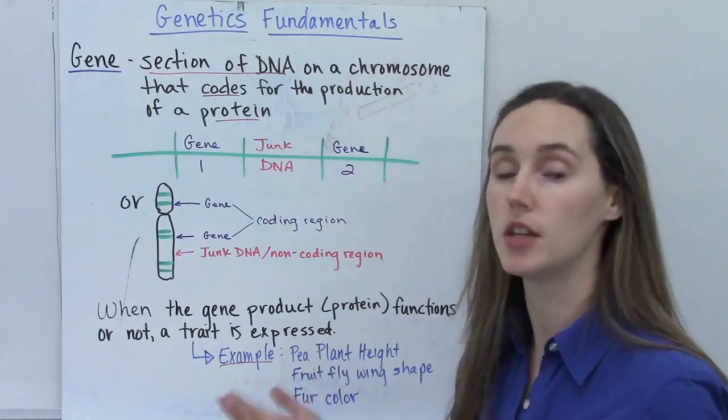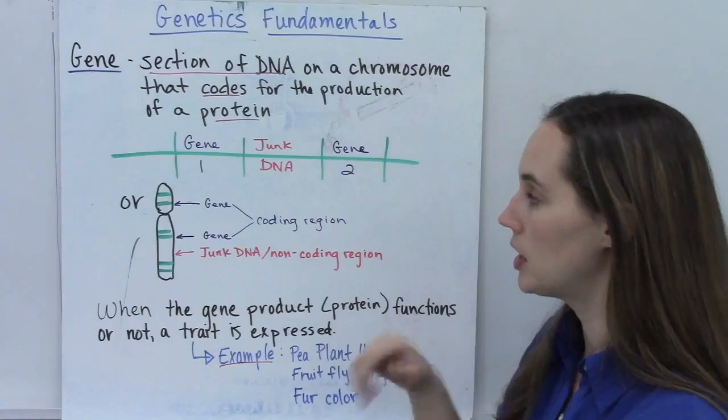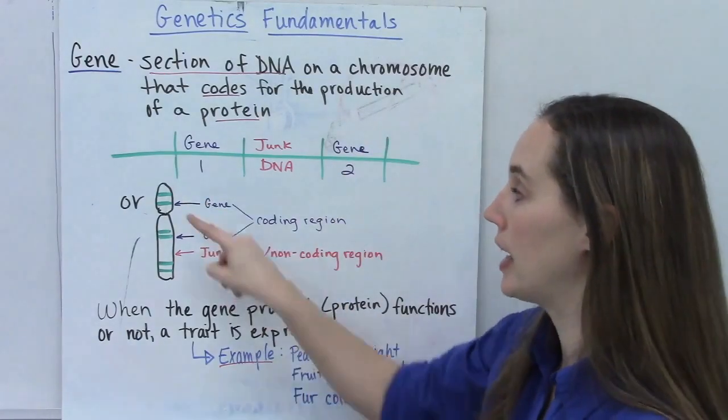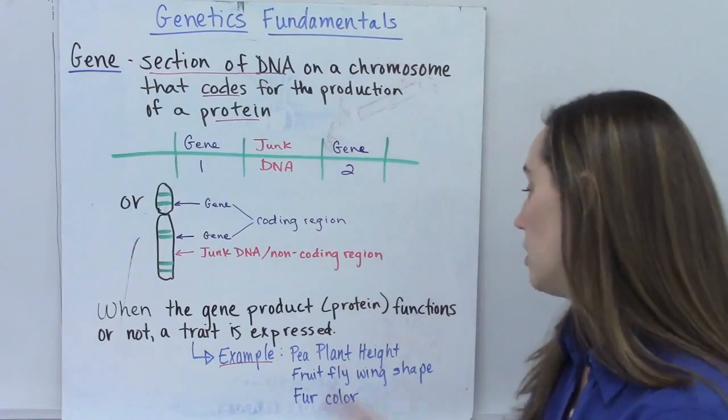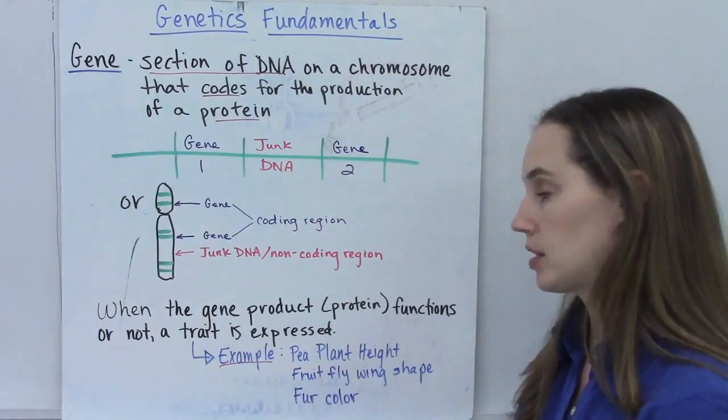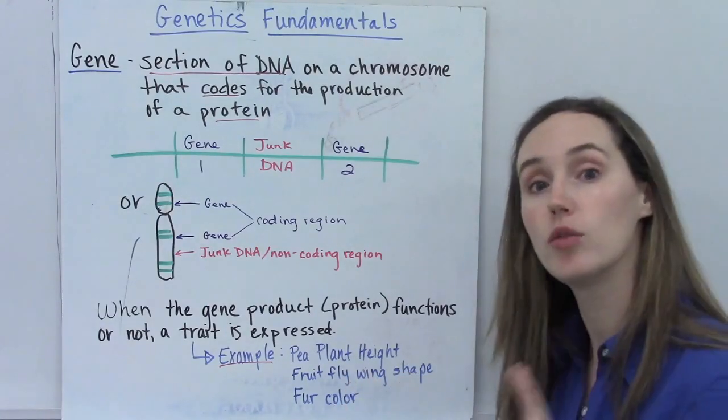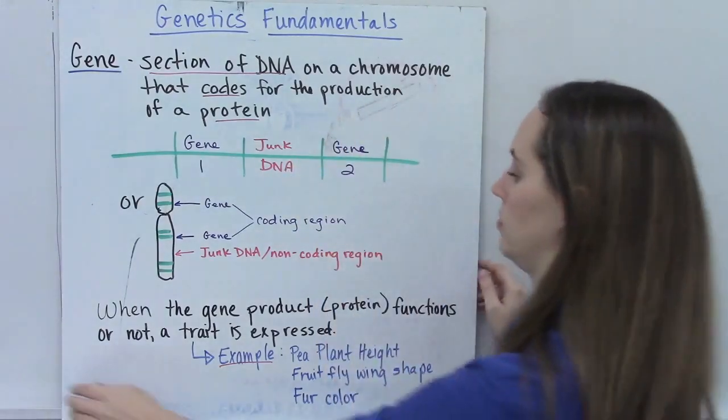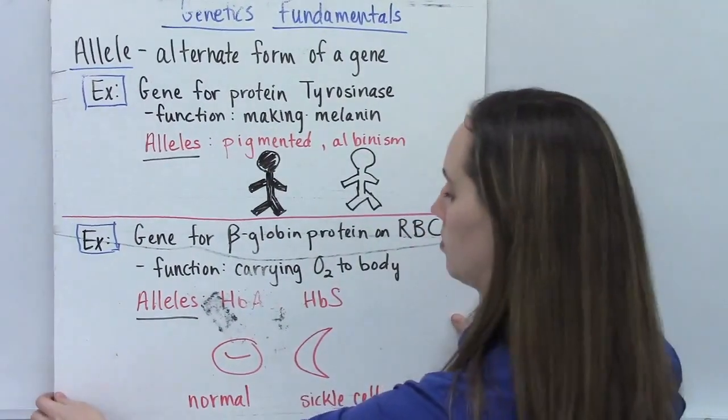We're learning more and more that some parts of the junk DNA may actually have functions, non-coding functions, but still functions within the cell in the genome. When you see a picture of a gene you may see a series of them linearly, or you may see a picture of a chromosome, and if it's like a map, a gene map, then you might actually see these little colored stripes that represent the genes. So when a gene's product, a protein, does its job, does its function, or if it doesn't, a trait is expressed. Examples of traits are like height in pea plants, wing shape in fruit flies, eye color, hair color, fur color.